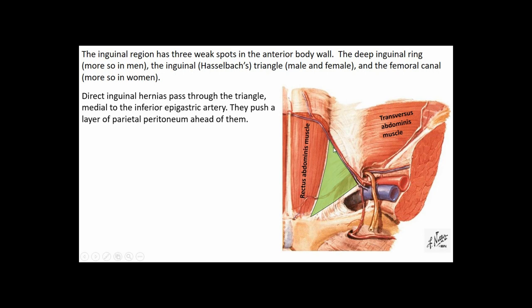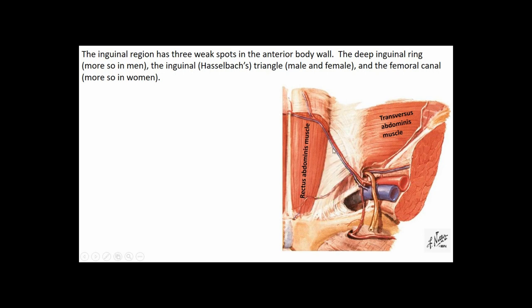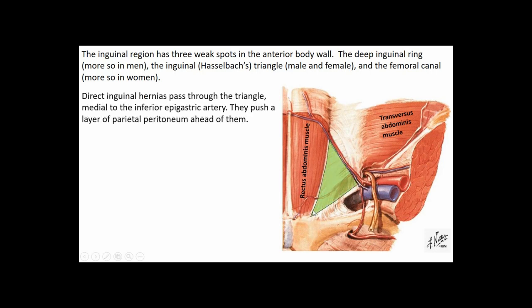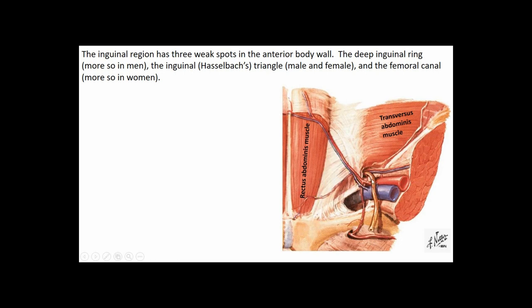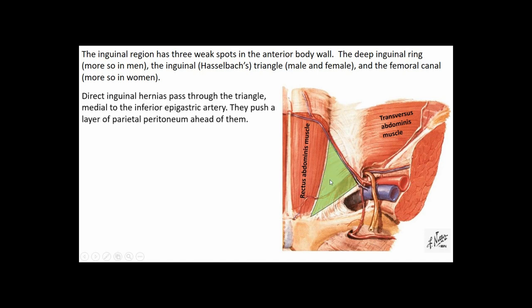Medial to the inferior epigastric artery and vein is Hesselbach's triangle, or the inguinal triangle — a weak spot not because of a large gap but because it has less muscular covering. If gut pushes outward against the anterior body wall through this triangle, it's a direct inguinal hernia. In real life, the parietal peritoneum covers this area, so the herniated gut pushes that layer ahead of it.